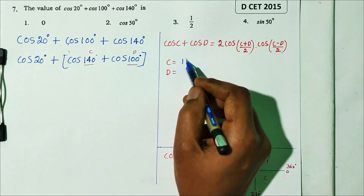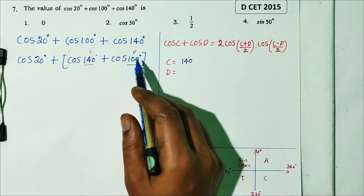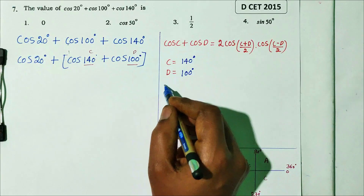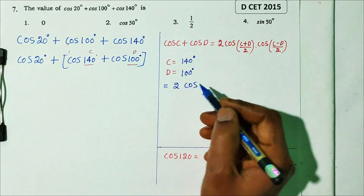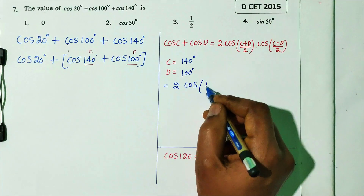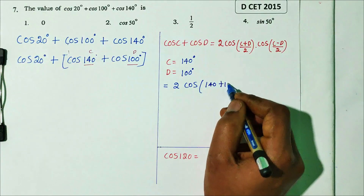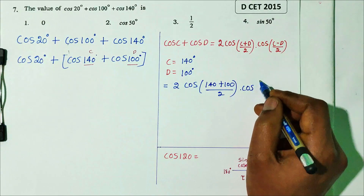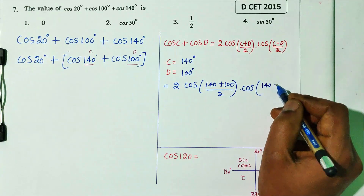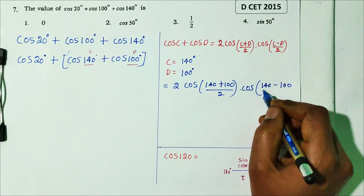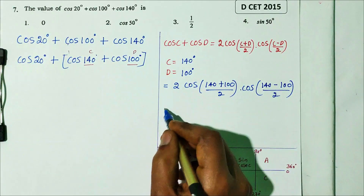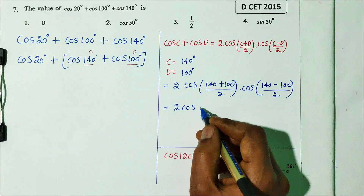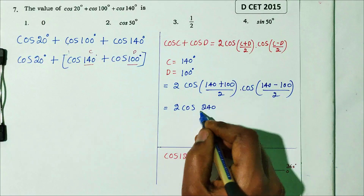Substituting: C is 140, D is 100. So 2 cos((140 + 100)/2) times cos((140 - 100)/2). That gives 2 cos(240/2) times cos(40/2), which is 2 cos 120 times cos 20.